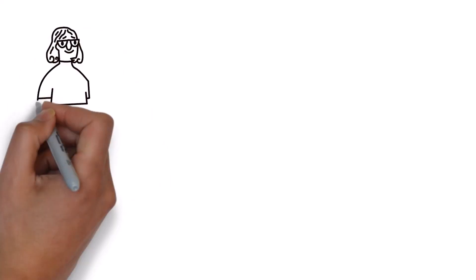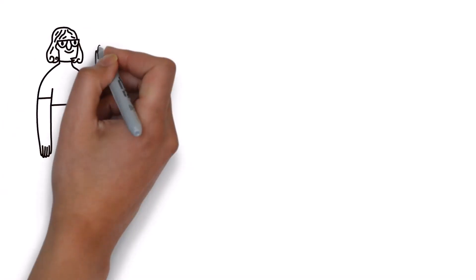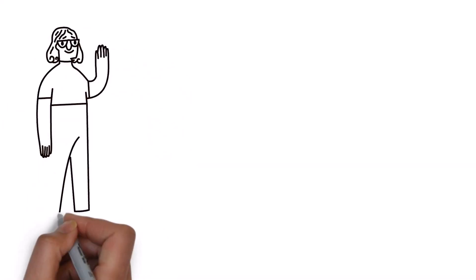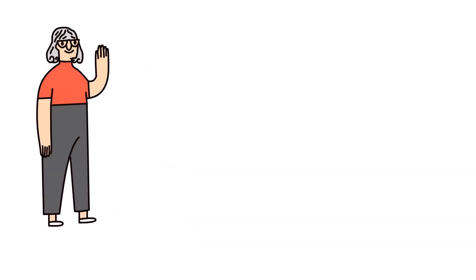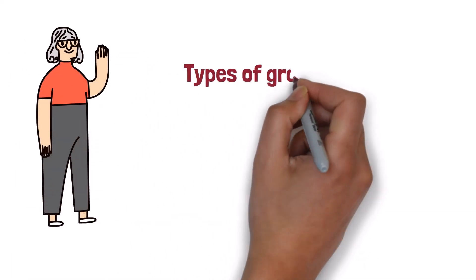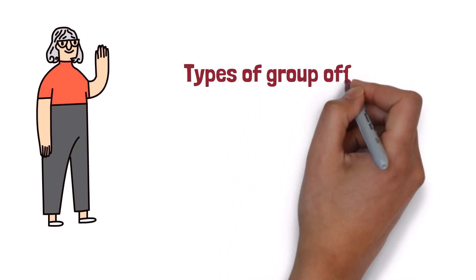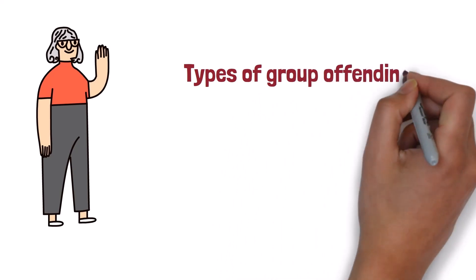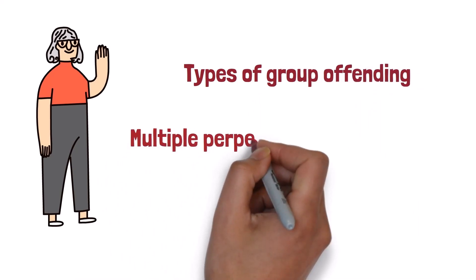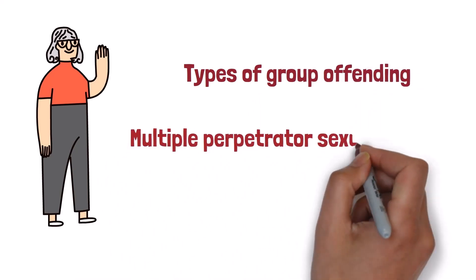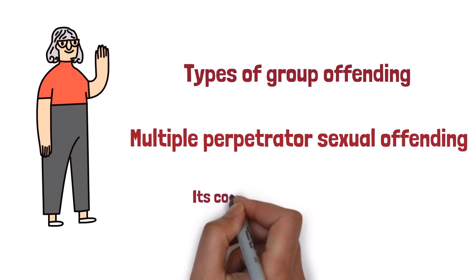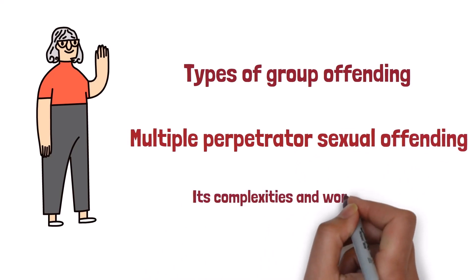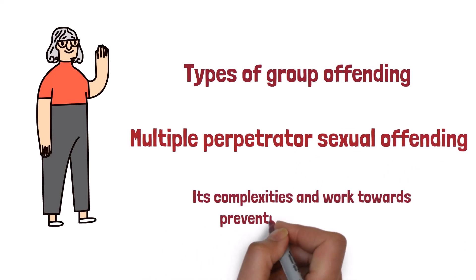Welcome back to our channel where we explore fascinating topics in psychology. In today's video we'll be diving into an important and often uncomfortable subject: types of group offending. Specifically, we'll be focusing on multiple perpetrator sexual offending. It's crucial to shed light on this issue to understand its complexities and work toward preventing such acts from occurring in the future.